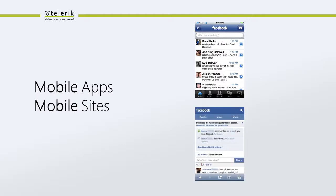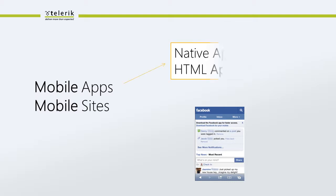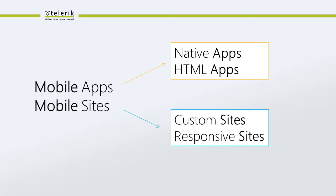A mobile site, on the other hand, is something usually deployed through the mobile device's browser — an adaptation of a fuller website that adapts its layout to be more usable on a small screen. If we go about building mobile apps, we can build so-called native apps using a device's SDK and native UI elements, or we can build HTML apps. For mobile sites, we can build custom mobile sites or responsive sites — websites that automatically respond to different devices with adaptive layouts.